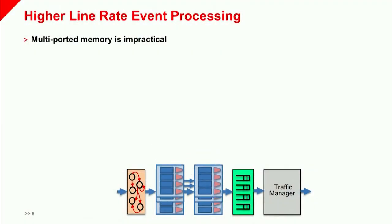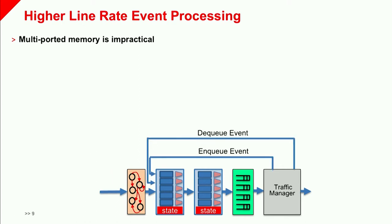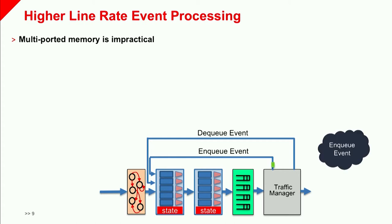However, on higher line rate devices where multiported memory is impractical, these separate logical pipelines would actually be mapped onto the same physical pipeline, so state is always local to the same physical pipeline stage. In this animation, an ingress packet event occurs, the parser extracts headers in the normal way, which propagate through the match-action pipeline stages. The deparser reassembles the final packet, which is inserted into the buffer in the traffic manager. Once enqueued, it extracts metadata about that packet and fires the enqueue event, recirculating it back around.